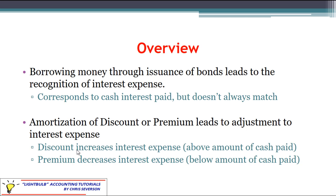If we have a bond premium, that will be amortized over the life of the bond. This will decrease interest expense below the amount of cash paid.